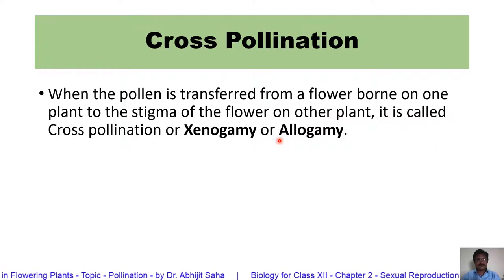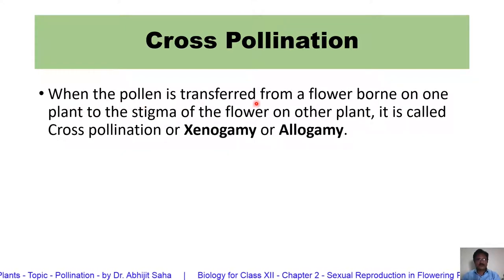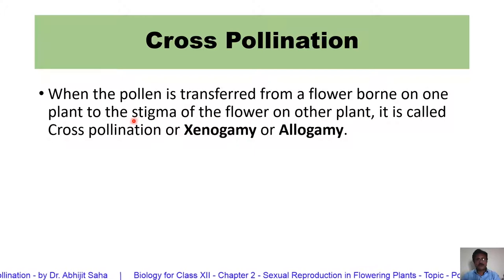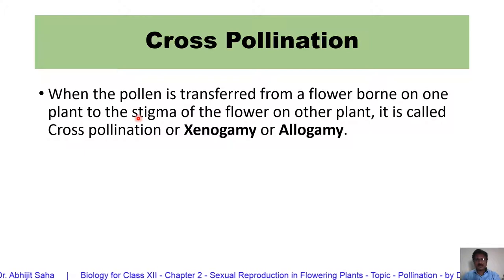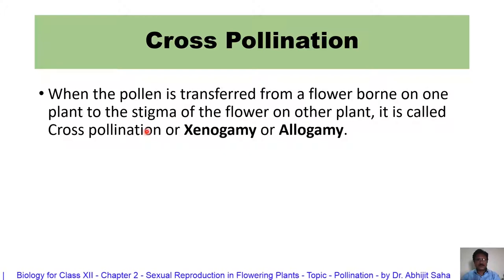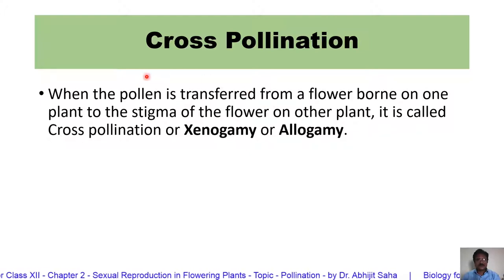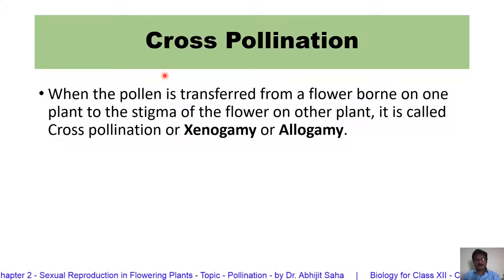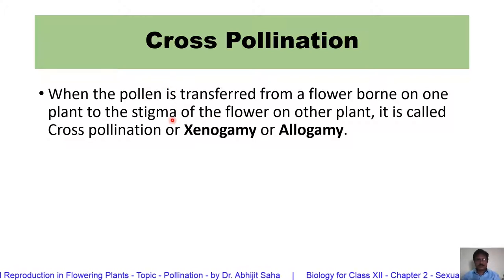Next, come to cross-pollination. In cross-pollination, the pollen is transferred from one flower to a flower borne on a different plant — the two flowers are borne on two different plants. Such type of pollination is called xenogamy or allogamy. In getonogamy, the two flowers were on the same plant, but here in cross-pollination, the two flowers are on two different plants.